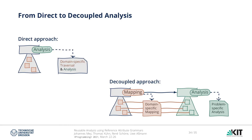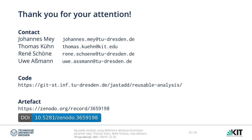To conclude, we have presented an approach for specifying analysis in a reusable way using attribute grammars. In comparison to a direct approach, the construction of a problem-specific intermediate data structure and the transformation using higher-order attributes allows us to write reusable analysis. Additionally, we have shown that the approach works well for complex languages such as Java, even for large projects. Thank you for listening. If you are interested in our work, feel free to contact us. The source code is available online, both in a Git repository and as an artifact in Zenodo.